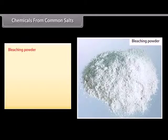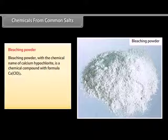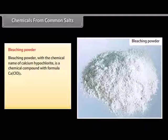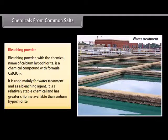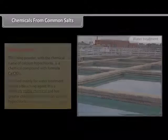Bleaching powder, with the chemical name calcium hypochlorite and formula CaClO2, is used mainly for water treatment and as a bleaching agent. It is a relatively stable chemical and has greater available chlorine than sodium hypochlorite.